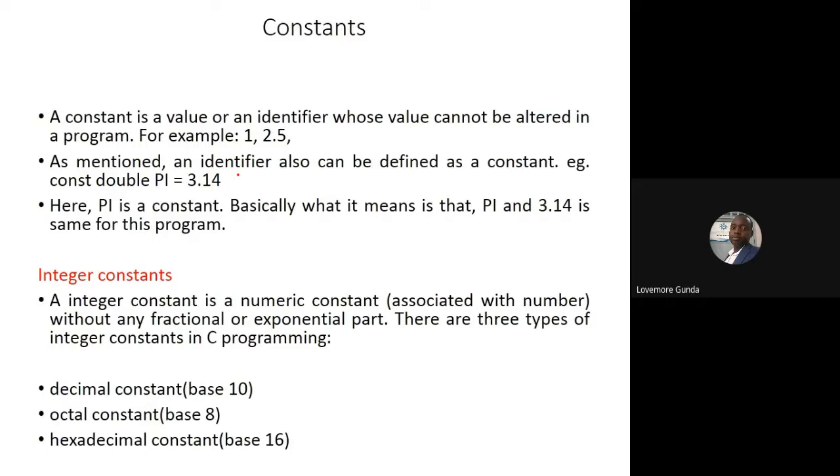There are also identifiers called constants. When you declare something as a constant, it means you cannot alter it in the program. So if you say const double PI = 3.14, it means now when you make reference to PI, the value will automatically be 3.14.